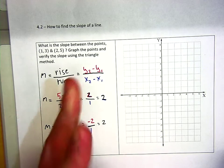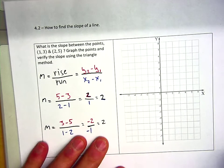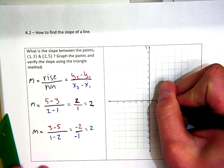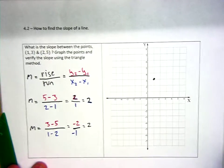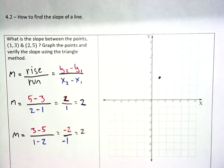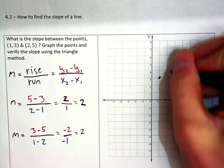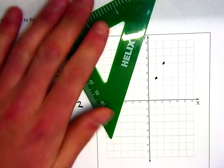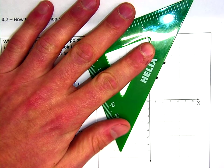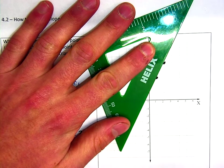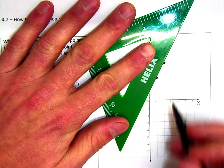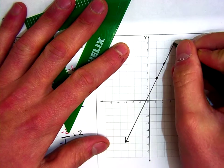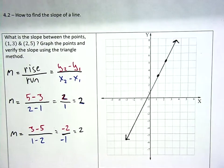Let's graph this and use the triangle method to confirm it. I have the points (1, 3) — that's 1 along the x-axis and 3 along the y-axis — and the point (2, 5), which is 2 and 5. I've got these two points, and I can graph them using a straight edge, lining it up as closely as possible. That's what my line looks like.